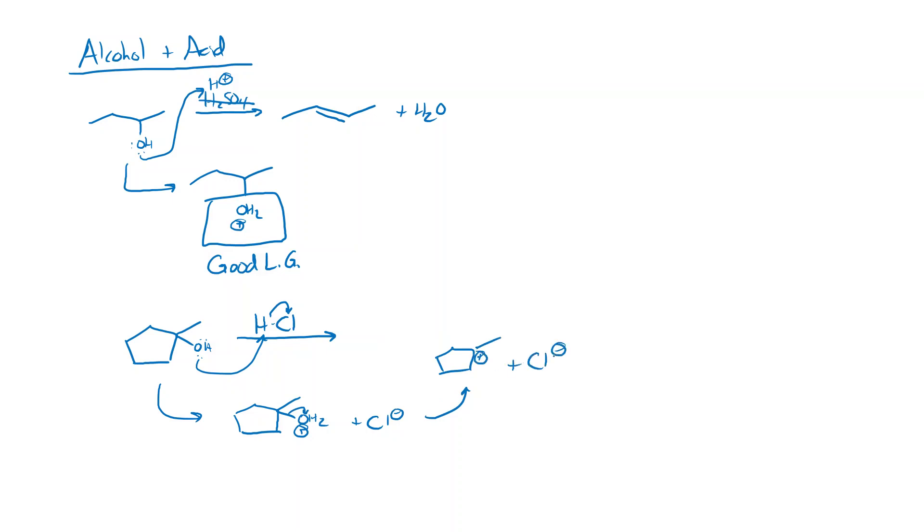And as soon as we make a carbocation, we go to our list. What are the things that carbocations do? They can do SN1, they can do E1, they can rearrange. This one's not going to rearrange because it's tertiary. In fact, this one is going to do an SN1 reaction. And so the chlorine adds in there and we get an SN1 process.